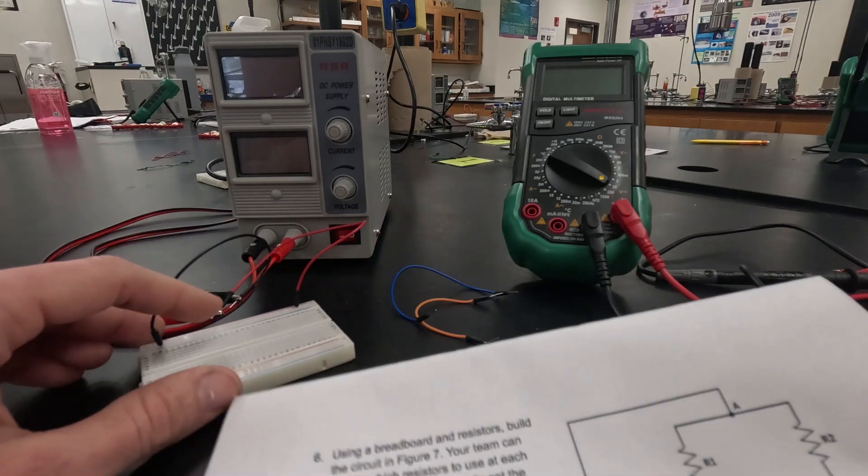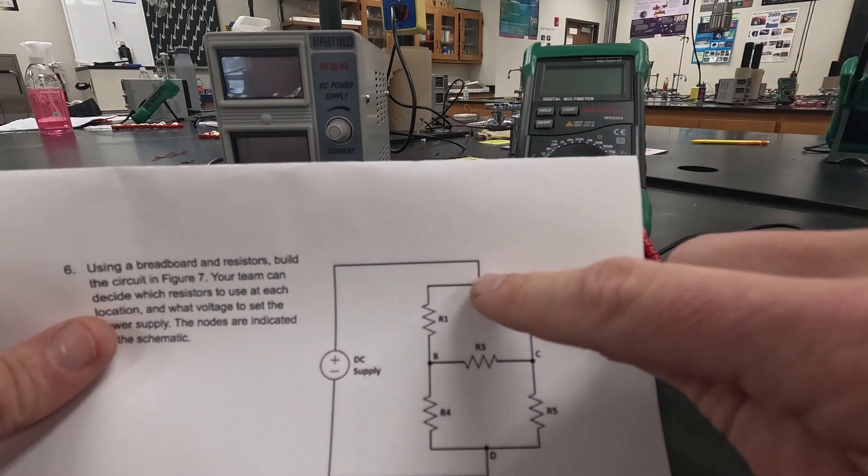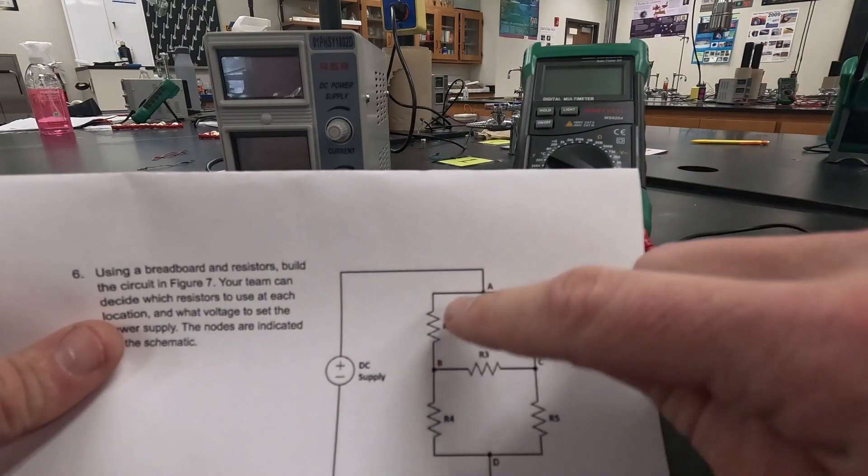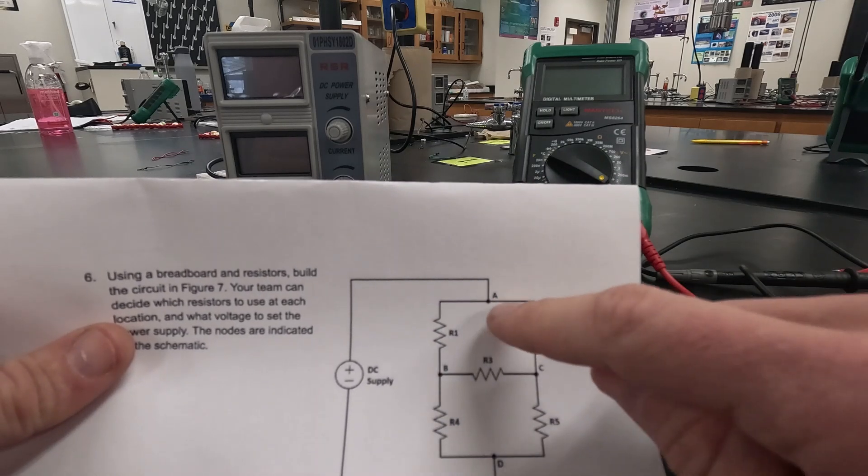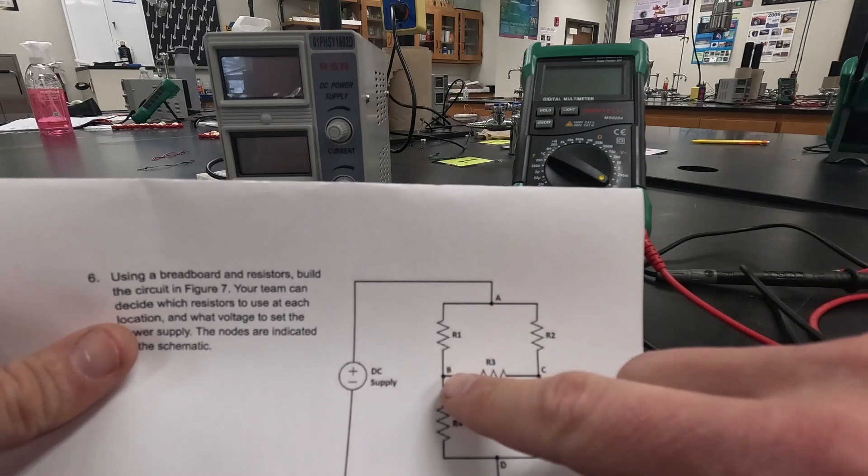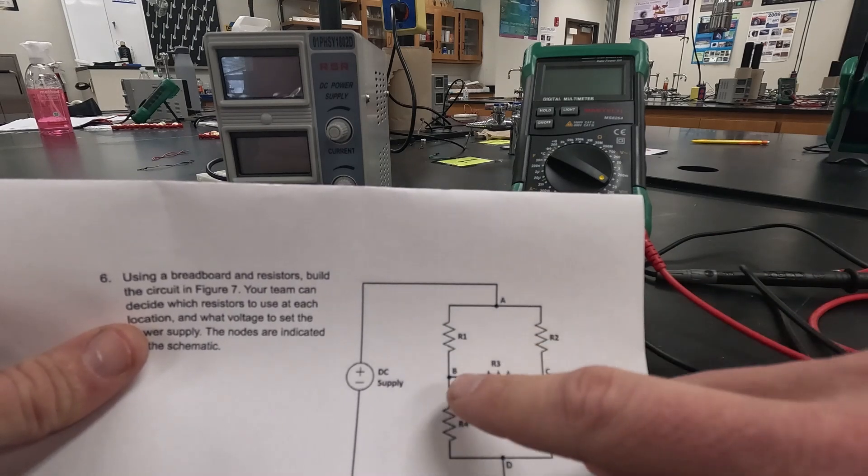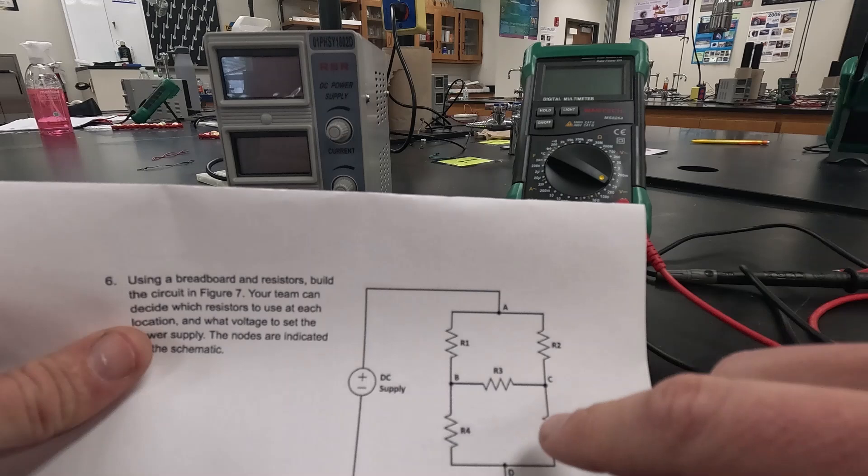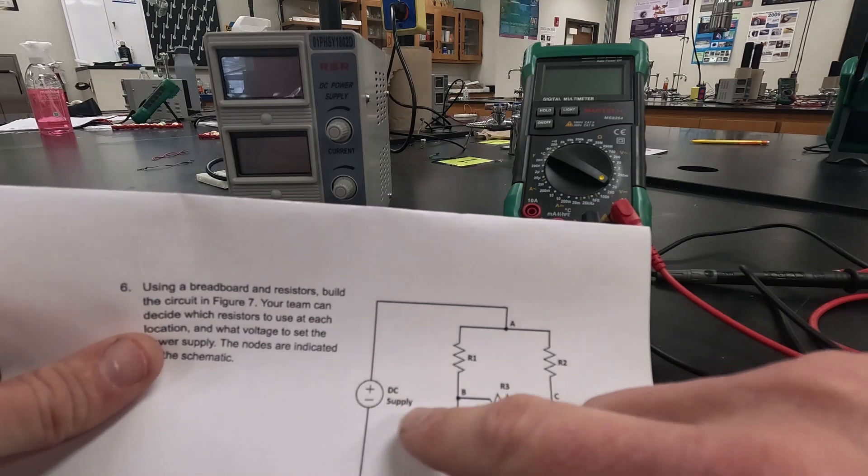This circuit comes into node A and then separates into two different resistors, two different lines that are parallel to each other. This one takes you to node B, this one takes you to node C. Then they end at the same spot so we have two parallel lines that end at node D and then takes us back to our power supply.